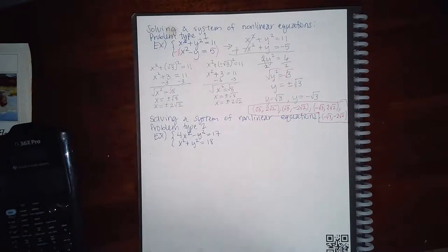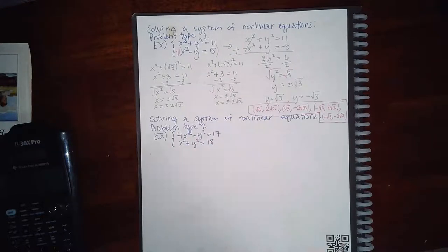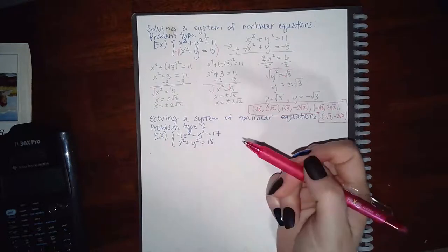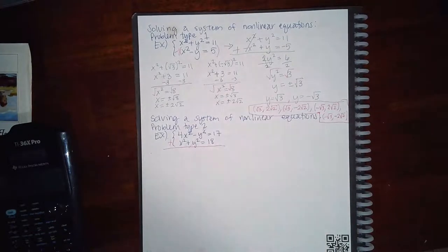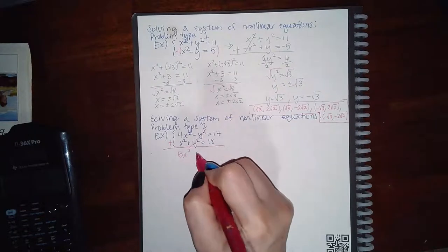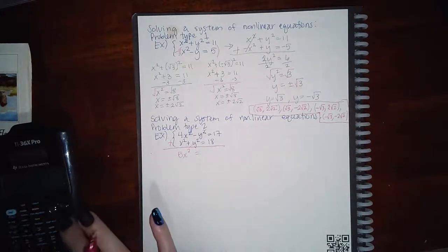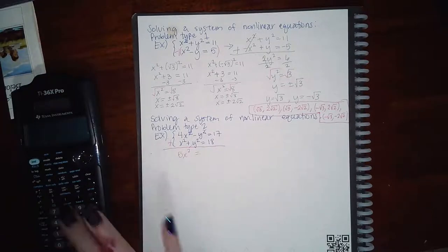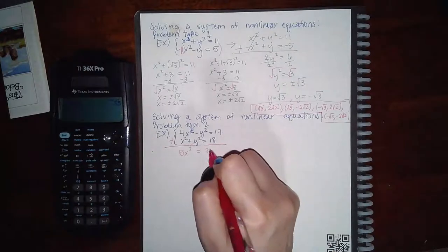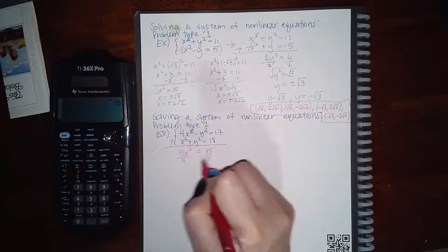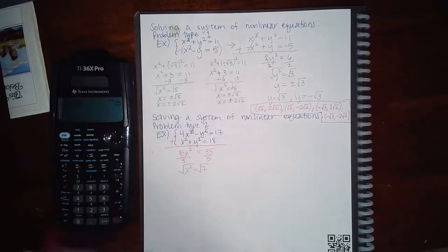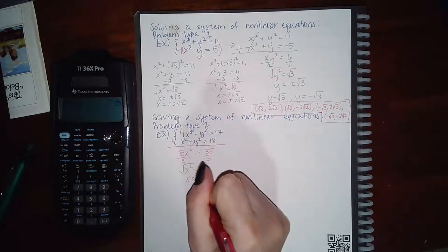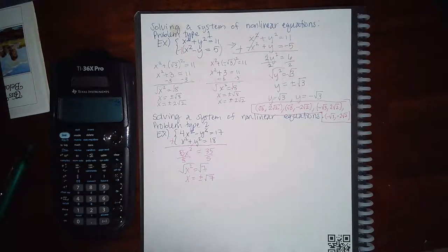Now let's look at Problem Type 2 — solving a system of nonlinear equations. This one also has x² and y² in both equations, so I can choose which to eliminate. I notice that if I add the equations immediately, the y² terms automatically cancel, giving 5x² = 35. Dividing both sides by 5 and taking the square root gives x = ±√7.